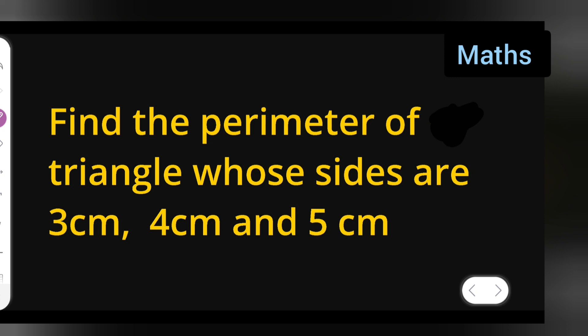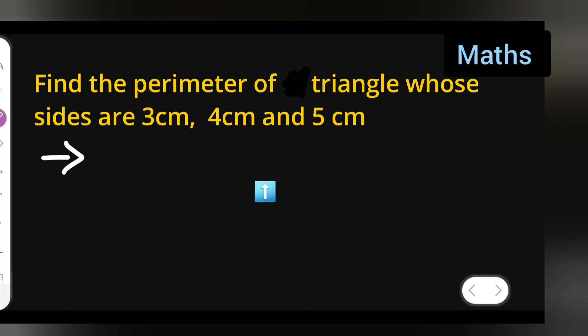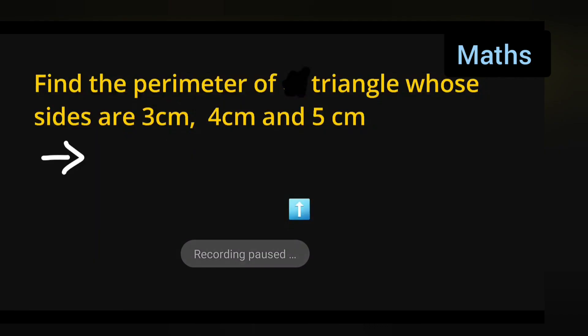find the perimeter of the given triangle. Okay, so here also you can take down the question. First you'll have to find the perimeter of the triangle whose sides are 3 centimeter, 4 centimeter and 5 centimeter. So a triangle has three sides, right? Triangle is always of three sides. One is having 3 centimeter, one is having 4 centimeter and one is having 5 centimeter.